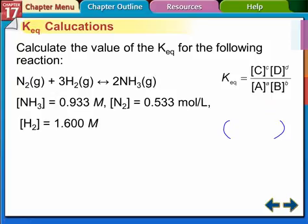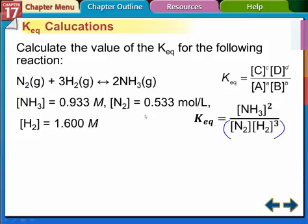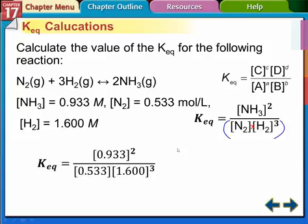Try your calculators out on this one and figure out the equilibrium constant. The first thing you want to do is put the equation into the equilibrium expression. It should look like this: the concentration of ammonia squared — that's the product — divided by the concentration of nitrogen times the concentration of hydrogen to the third power. You're going to multiply those concentrations together, not add them. So this number divided by this concentration times this concentration to the third power. Sometimes students mess this up on their calculators, so try it out.